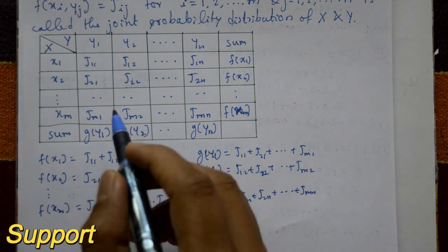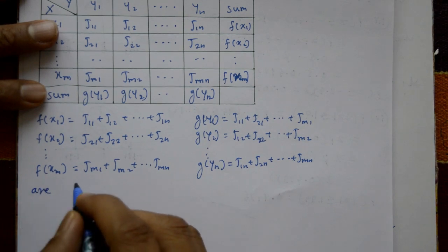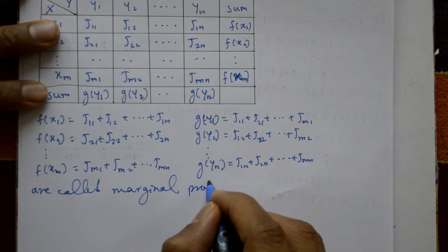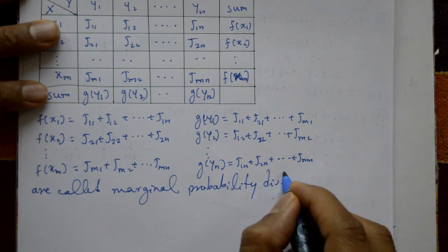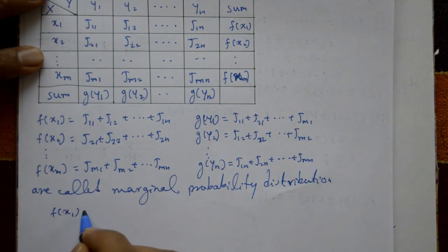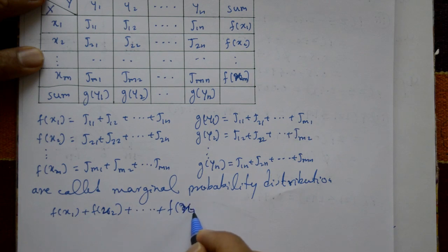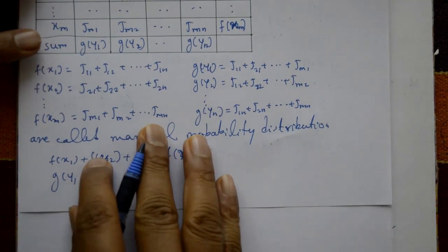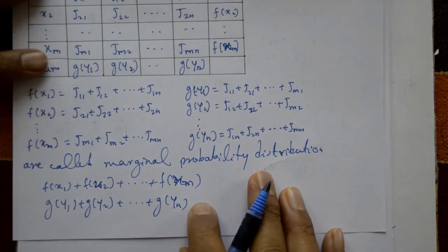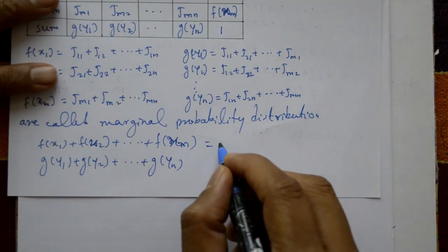These row-wise and column-wise sums are called the marginal probability distributions. It should be noted that f(X1) + f(X2) + ... + f(XM) = 1, and g(Y1) + g(Y2) + ... + g(YN) = 1. Each set of marginal probabilities sums to one.